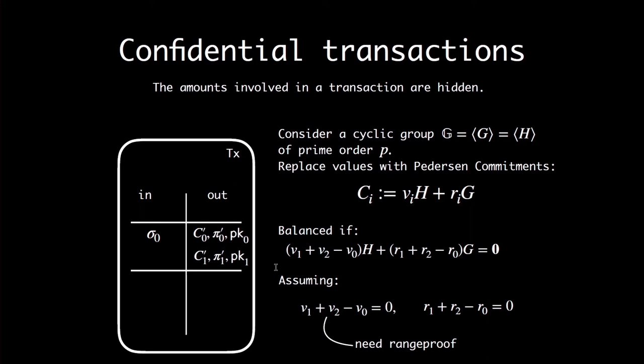One problem is how to check that the transaction is balanced — that the sum of outputs minus the sum of inputs equals zero. The person creating the transaction selects the openings so they sum to zero, and if the sum of the output commitments minus the input commitments is the identity element, it means the values add up to zero and the transaction is balanced. It is slightly more complicated because the values are elements in a finite field, so I could have a wraparound problem. To fix that, I add a range proof — a simulation-extractable, zero-knowledge proof that the value is, for example, 32 bits long.